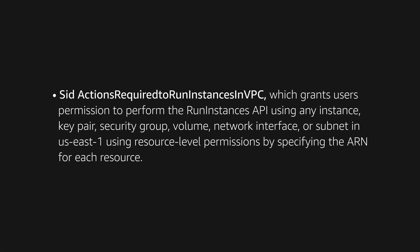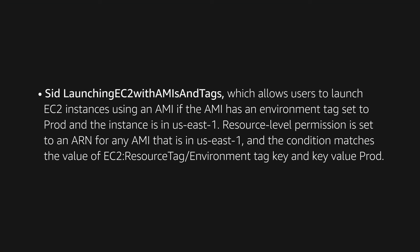The second is SID actions required to run instances in VPC, which grants users permissions to perform the RunInstances API using any instance, key pair, security group, volume, network interface, or subnets in US East 1, using resource-level permissions by specifying the ARN for each resource. The third is SID launching EC2 with AMIs and tags, which allows users to launch EC2 instances using an AMI if the AMI has an environment tag set to prod and the instance is in US East 1. Resource-level permission is set to an ARN for any AMI that is in US East 1.